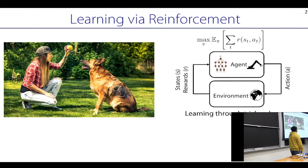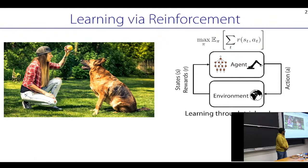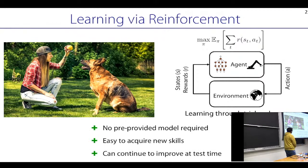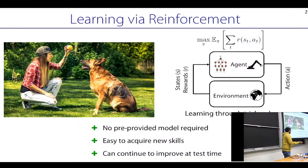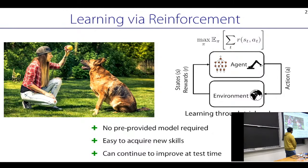As a recap, reinforcement learning is the general paradigm where an agent observes state S, takes action A, the environment transitions to new state S-prime, providing some reward. The goal is to learn a policy Pi that gets as high reward as possible by continuing to interact with the world. In principle, you don't need any pre-provided model — you can acquire it by sampling data in the real world and keep improving at test time.